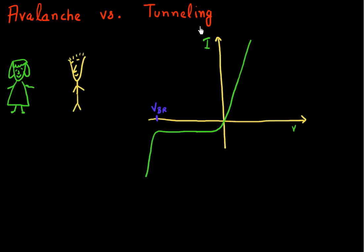So you're enjoying a sunny day in Stanford, and your friend who works in a lab on the other side of the campus has been doing some IV measurements on PN diodes recently. She has been observing that the current starts to increase exponentially as she goes beyond a certain voltage in the reverse bias regime.